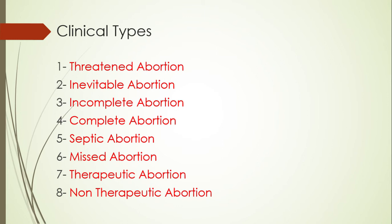The second type of abortion is inevitable abortion. Inevitable abortion means that whatever we do, the pregnancy will be terminated. In this type, all manifestations of pregnancy are present, but the bleeding is severe with severe spasmodic suprapubic pain. On bimanual examination, the cervix is found to be open and there may be passage of fetal tissue or amniotic fluid.